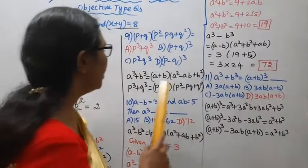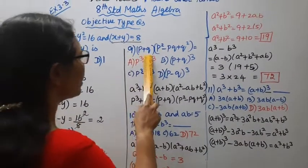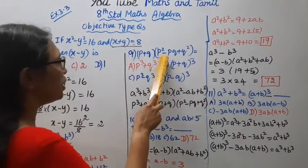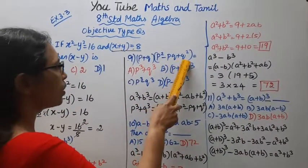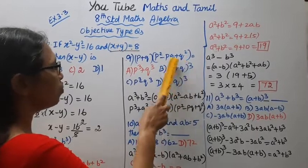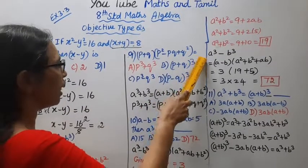Okay, 9th sum: P plus Q into P squared minus PQ plus Q squared equals dash.